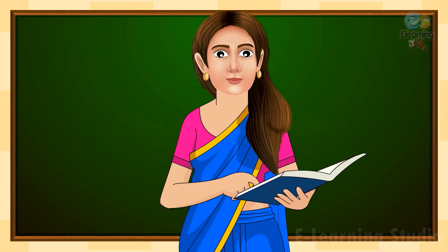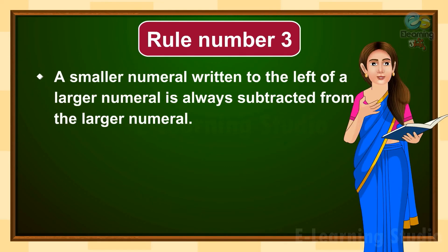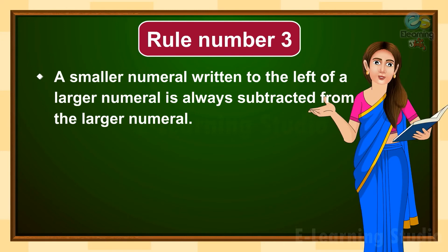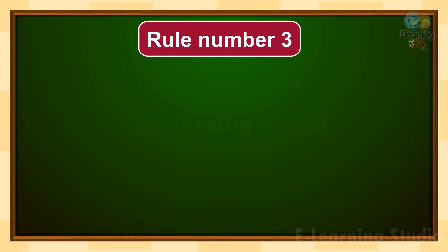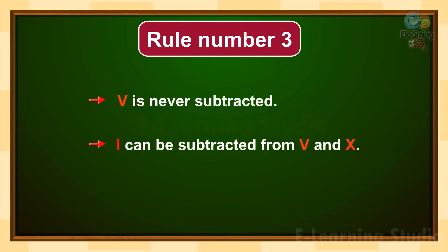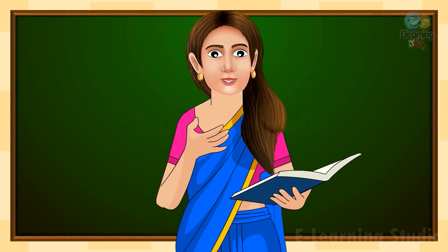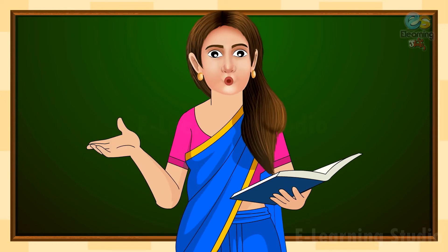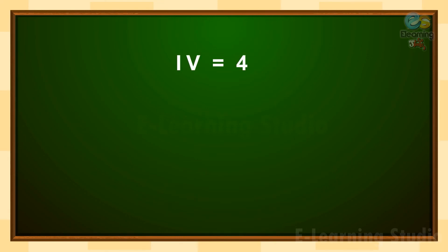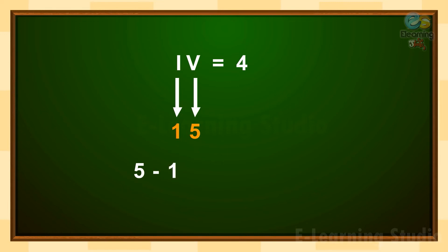Now let's move to the next rule. Rule number three: a smaller numeral written to the left of a larger numeral is always subtracted from the larger numeral. Children, V is never subtracted. I can be subtracted from V and X. In this example, you can see IV, which stands for the number four. Letter I is for one and letter V is for five. According to our rule, letter I, which is one, is smaller and is on the left side of letter V, which is five. We subtract both and we get four. In Roman numbers, this is IV.